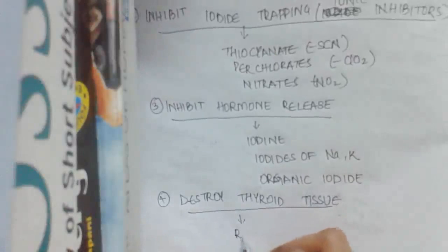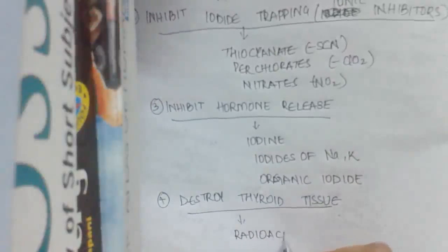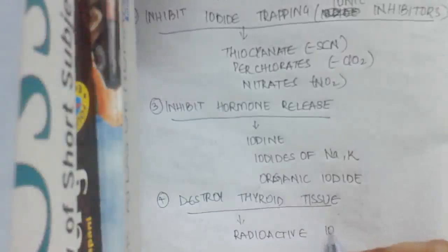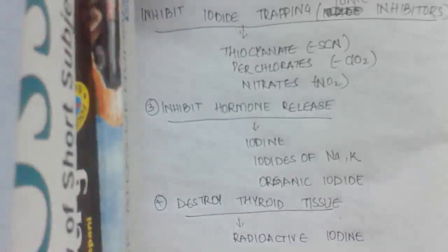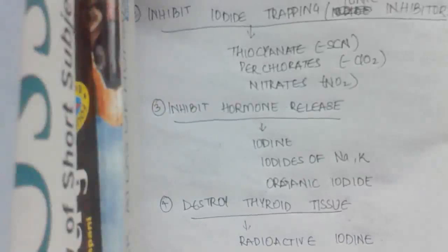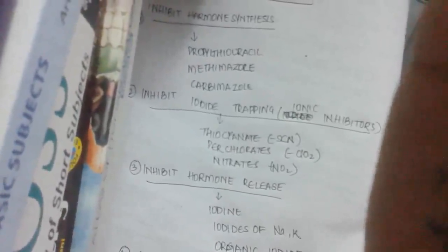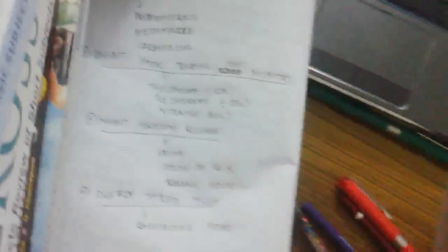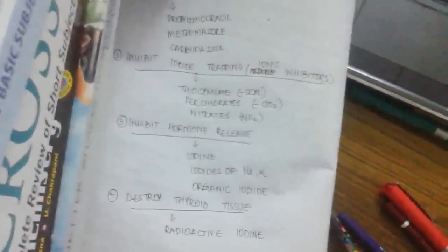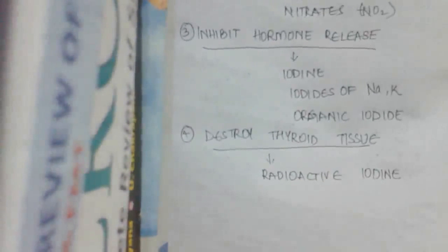The fourth and last class of drugs includes those which destroy thyroid tissue. These include radioactive iodine. The rationale for using all these drugs — whether hormone synthesis inhibitors, ionic inhibitors, hormone release inhibitors, or tissue-destroying agents — depends upon the specific clinical problem and the physician's judgment. In forthcoming classes, we will deal with each drug individually in detail.